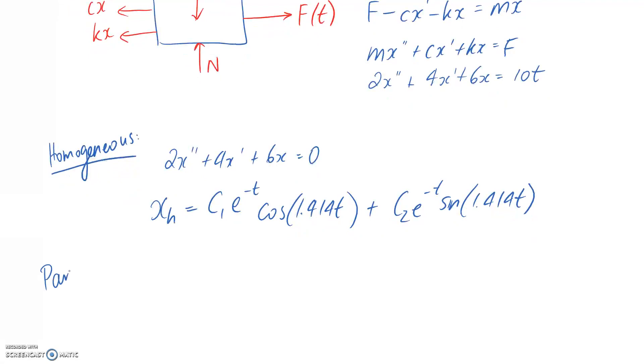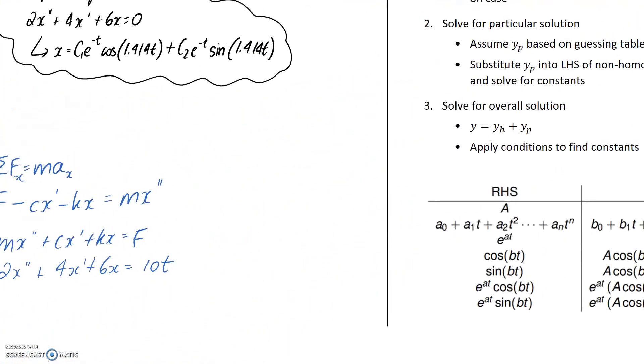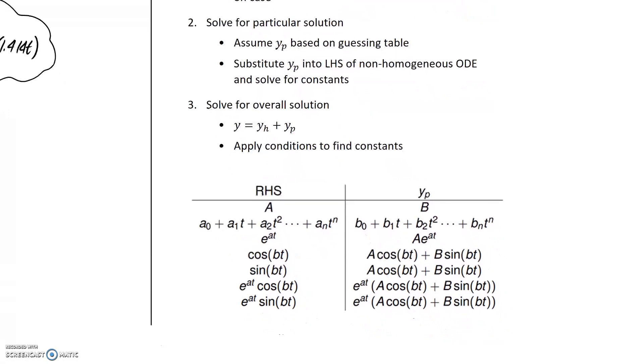The next thing that we need to move on to is looking at the particular solution. And this was something we didn't do in the previous video really, because we already had the right hand side being equal to zero. But this time we can see that the right hand side is not equal to zero, it's equal to 10t. So we are going to need to develop that particular solution.